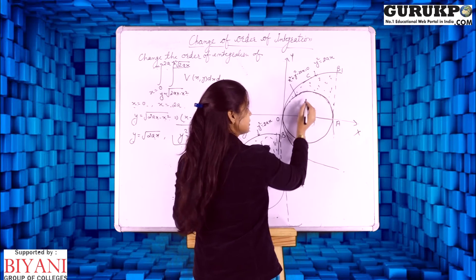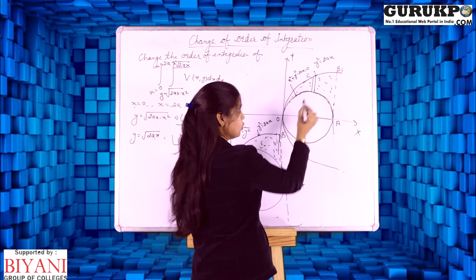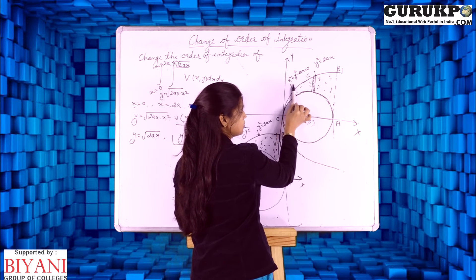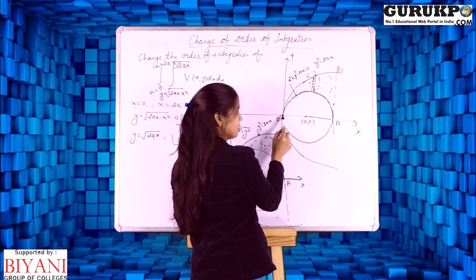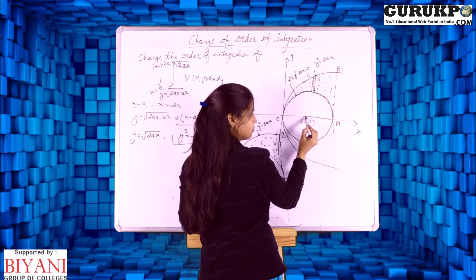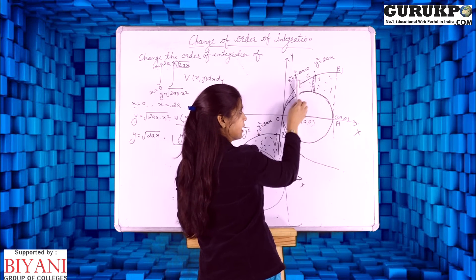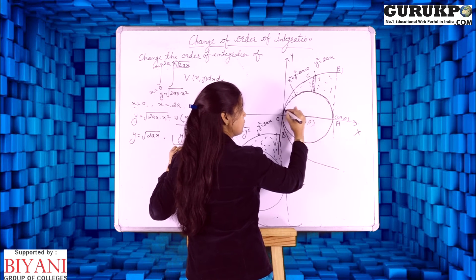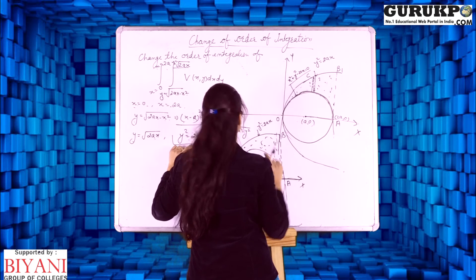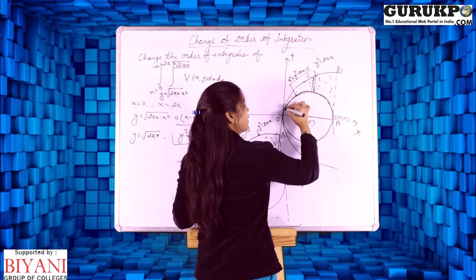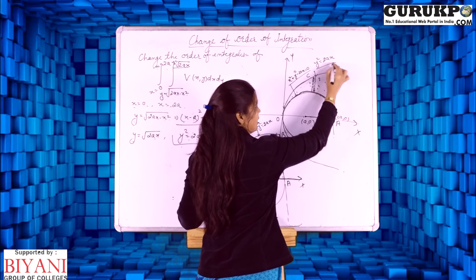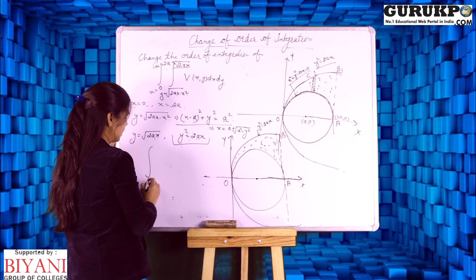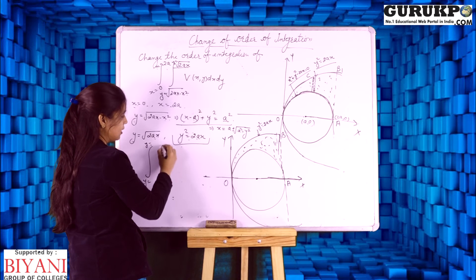In this situation x limits are constant, so we use a vertical strip. The strip starts at x = 0 and moves to x = 2a. The point (2a, 0) is on the x-axis — this is your radius distance. The starting point of the strip is always on the circle y = √(2ax − x²), and the upper portion is always on the parabola y = √(2ax). We want to change the order of integration so that the first limits are of y and the second limits are of x.